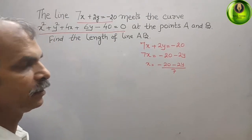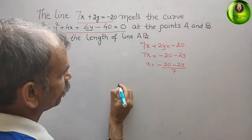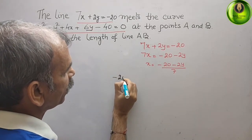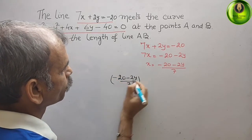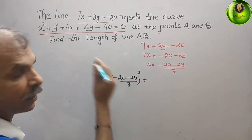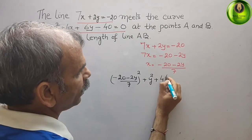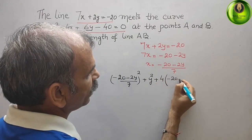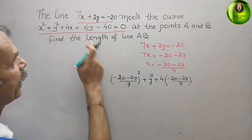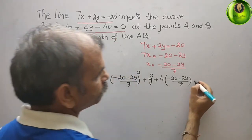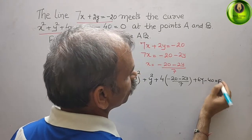What we will get? We will get x squared — that means this squared: (minus 20 minus 2y) over 7, whole squared — plus y squared, plus 4x which is 4 into (minus 20 minus 2y) over 7, then plus 6y, minus 40, equals 0.